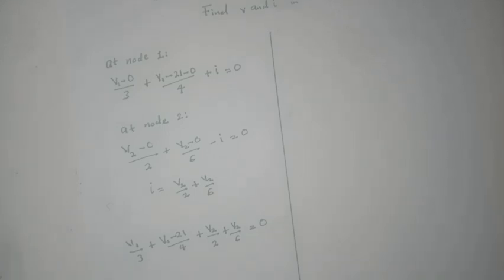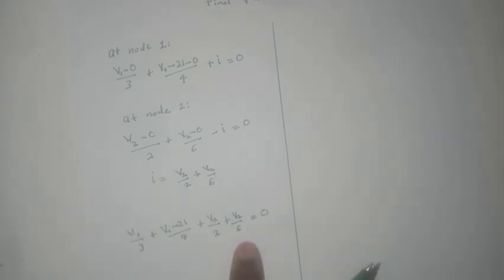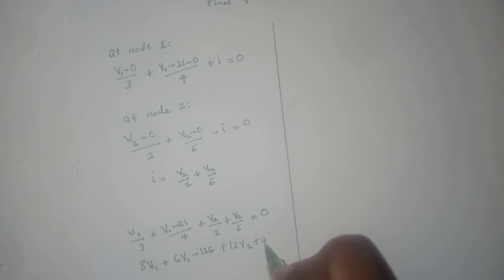So we can then proceed to multiply through by 24. If we do that we would have 8v1 plus 6v1 minus 126 plus 12v2 plus 4v2 equals 0.